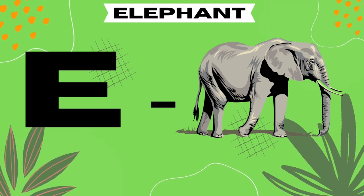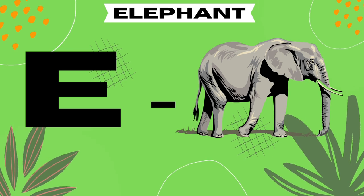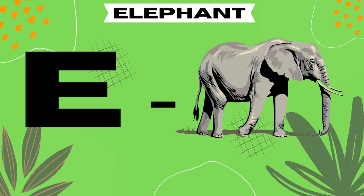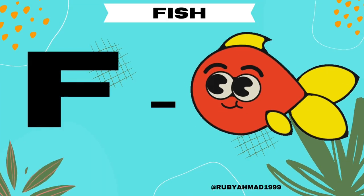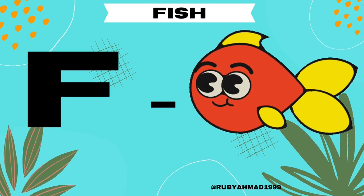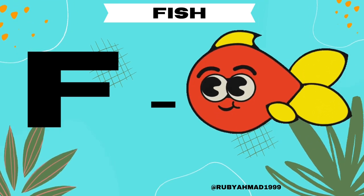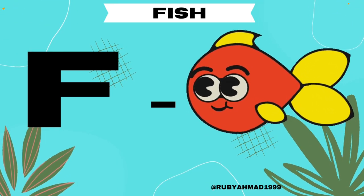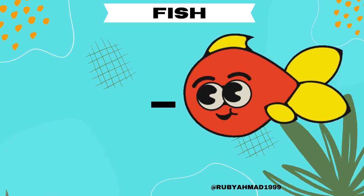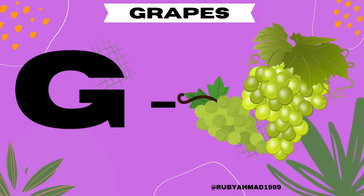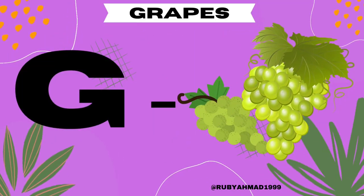E for elephant. F for fish. G for grapes.